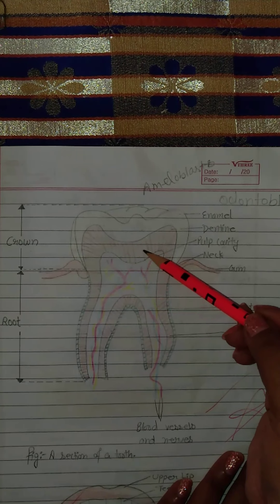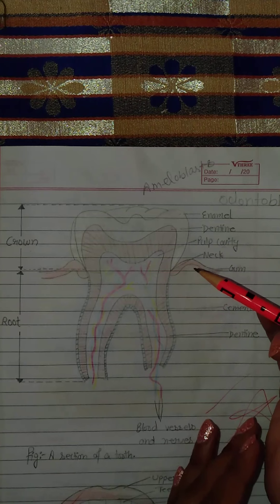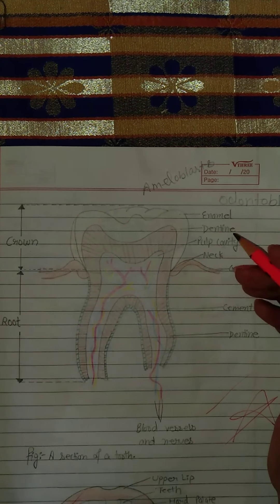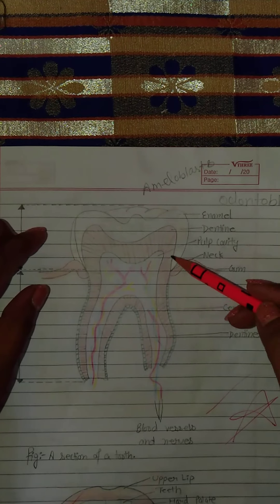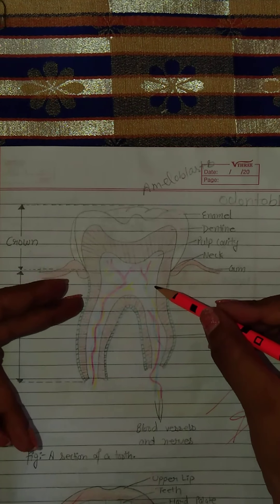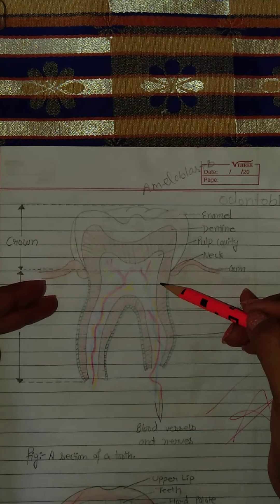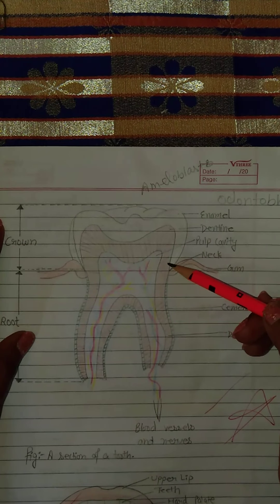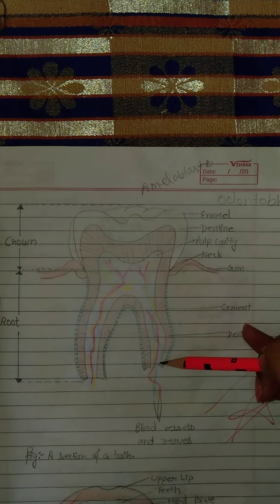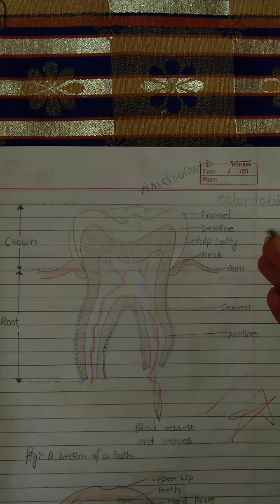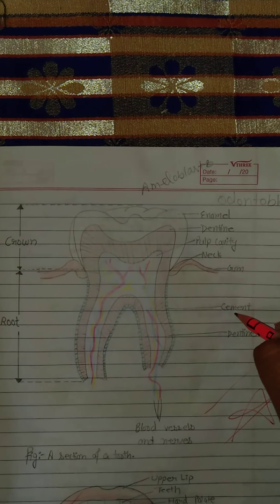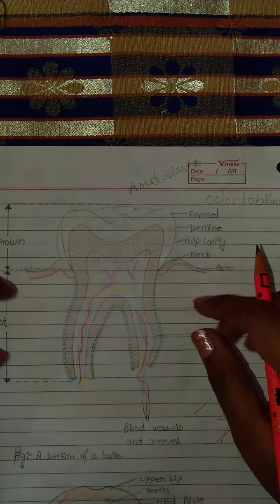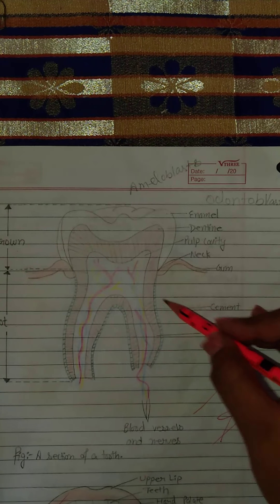The dentine further contains canaliculi, which are fine structures. After that, this pulp cavity is present in numerous parts of the teeth. This is known as cement, which protects and covers the root of the teeth, and this is the main part — the cement provides protection to the teeth so that the dentine, which is the main structural part, is safeguarded.